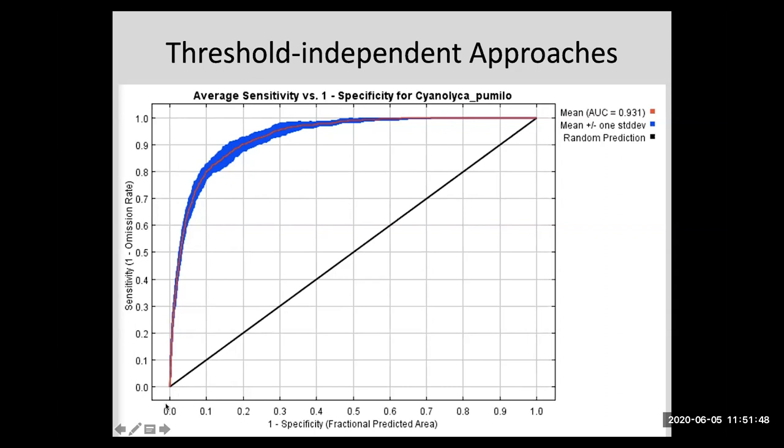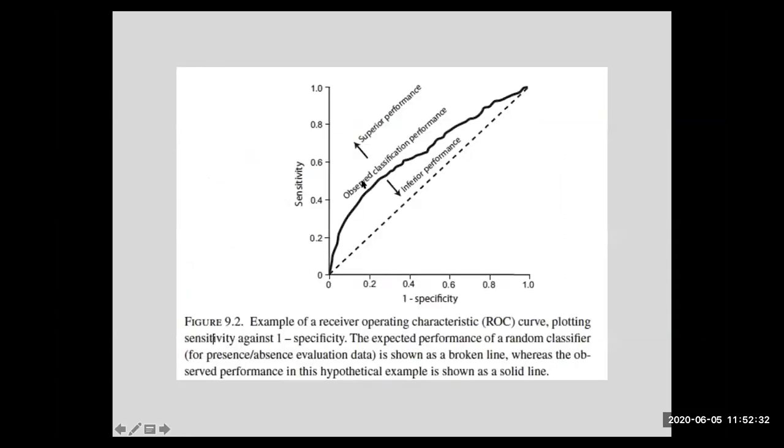So for example, here is the most common threshold independent approach. And essentially what we're seeing is predictions that go from predicting essentially none of the study area to essentially all of the study area. And so you can see those predictions are made at all of the values along that spectrum. And then we ask essentially for each of those possible thresholds, what is our omission rate? I'm rephrasing because I think it makes more sense this way. But this is, you've probably heard about the ROC test, receiver operating characteristic. And essentially what you do is you measure the area under this curve.